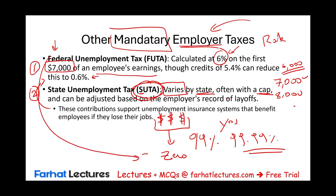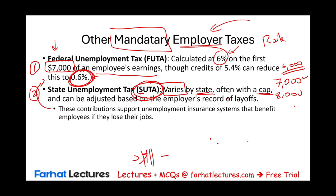During COVID, many states ran out of unemployment funds because benefits were extended, so the federal government stepped in to fund those states. To summarize: SUTA is the unemployment insurance fund that pays workers when they get laid off; FUTA administers and backs up SUTA in case state funds run out.